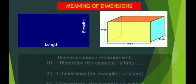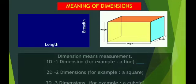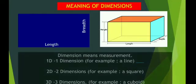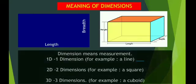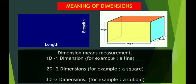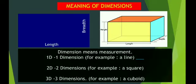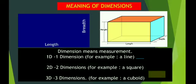Now what is the meaning of dimension? Dimension means measurement. 1D, one dimension, example is a line. 2D dimension, example is a square. 3D dimension, example is a cuboid.